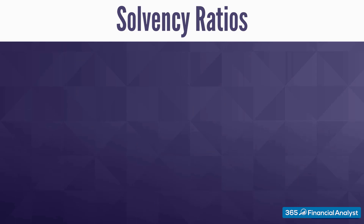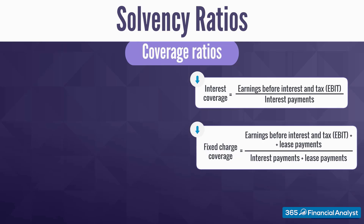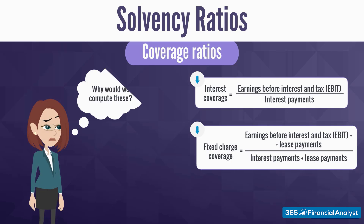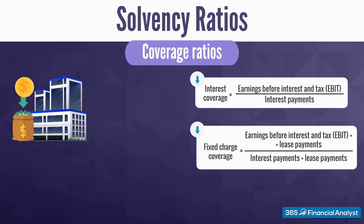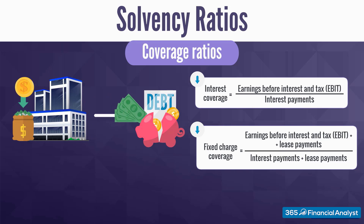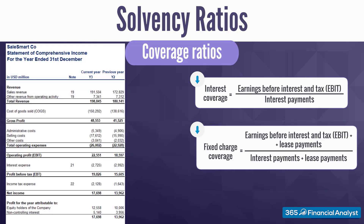Next, we move on to coverage ratios, which will further verify the conclusions we have just drawn. They illustrate the company's ability to repay its debt obligations with the income it generates. Given that SalesSmart hasn't incurred any significant debt, we can expect that the coverage ratios will not exhibit any alarming results. You'll need the firm's income statement to estimate those.